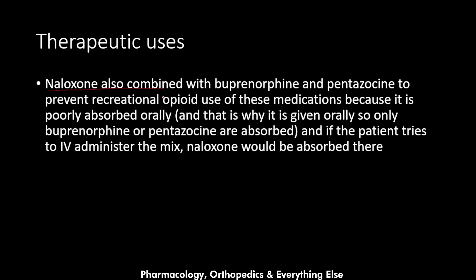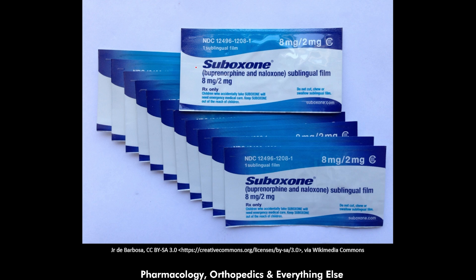Naloxone is also combined with buprenorphine and pentazocine to prevent recreational opioid abuse of these medications. Because naloxone is poorly absorbed orally, only the buprenorphine or pentazocine is absorbed when taken by mouth, helping patients manage withdrawal symptoms. However, if someone attempts to abuse the combination by converting it to an intravenous form, the naloxone gets absorbed, blocks the receptors, and causes severe withdrawal symptoms. The well-known trade name for this combination is Suboxone — a buprenorphine plus naloxone sublingual film.